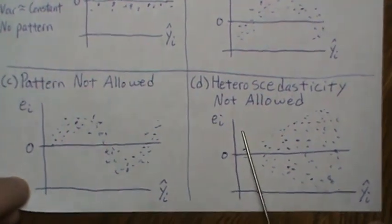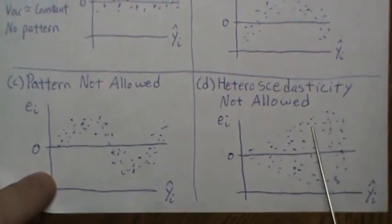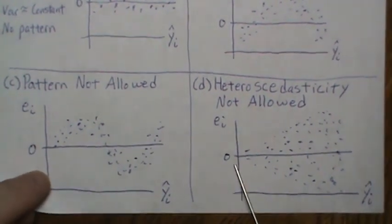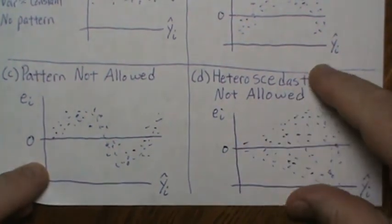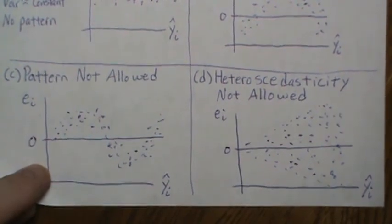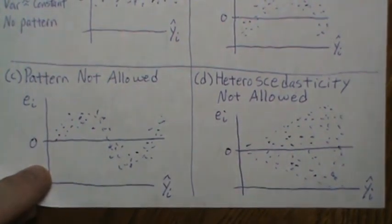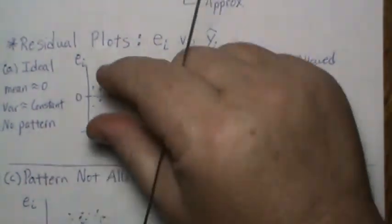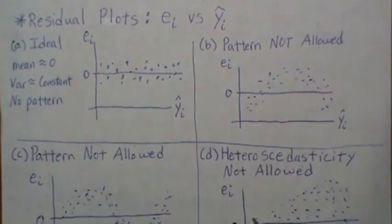Now the last one we'll look at is heteroscedasticity, and that means non-constant variance. Notice that the variance gets bigger as we go across the fitted value range. Here it's a constant variance, so that's called homoscedastic, and this is heteroscedastic, and that's a violation.